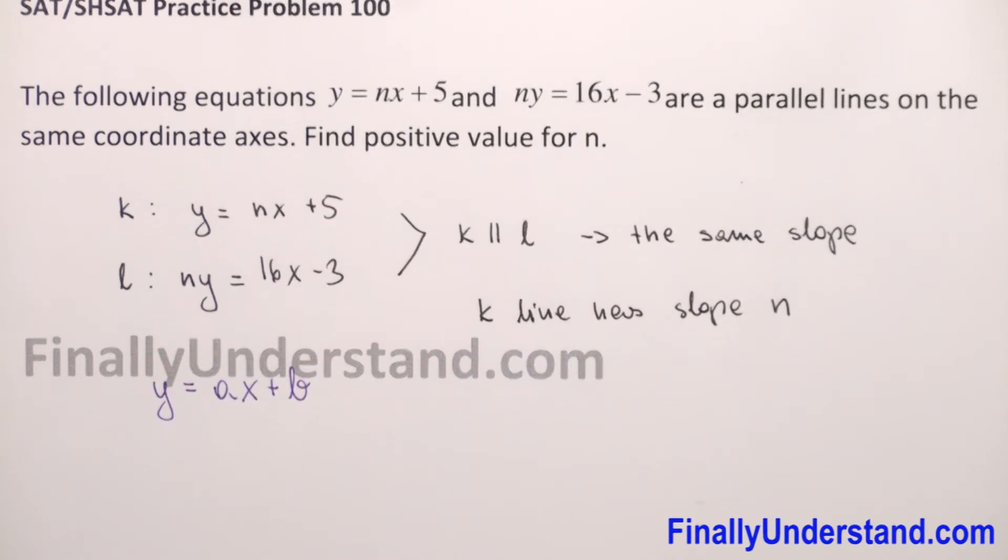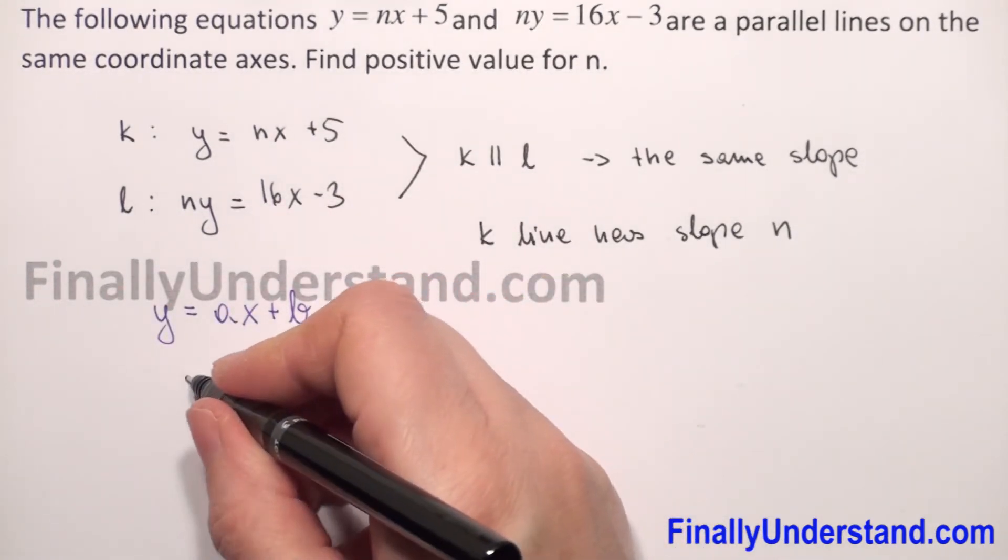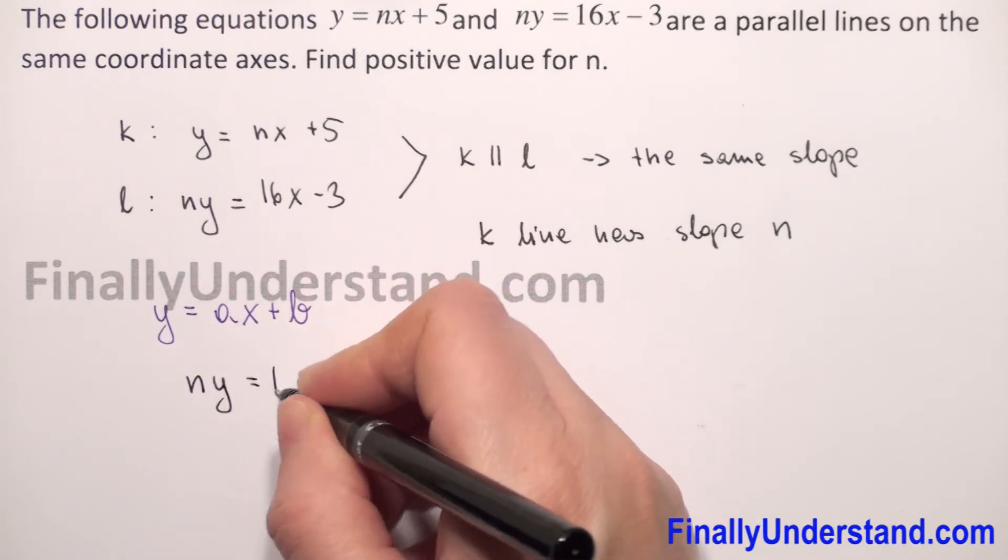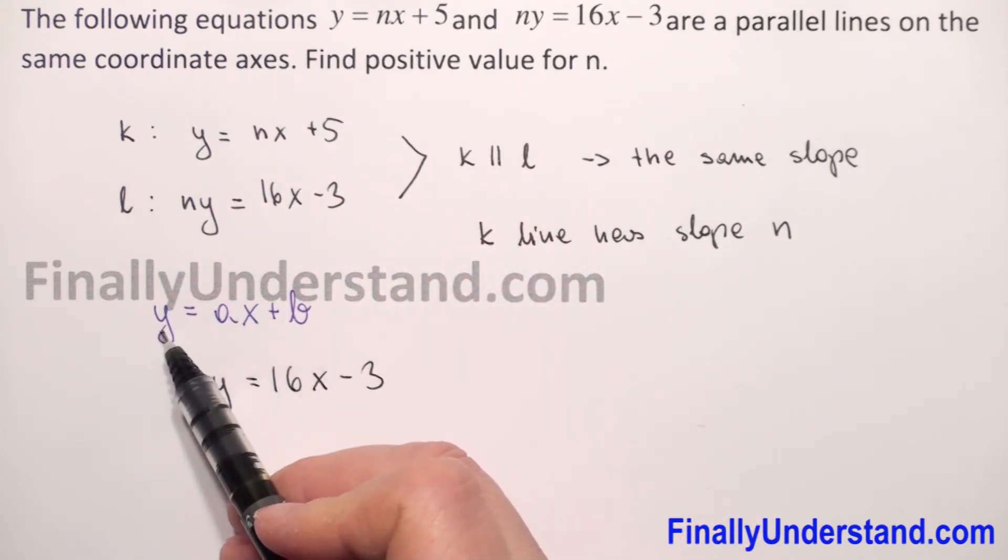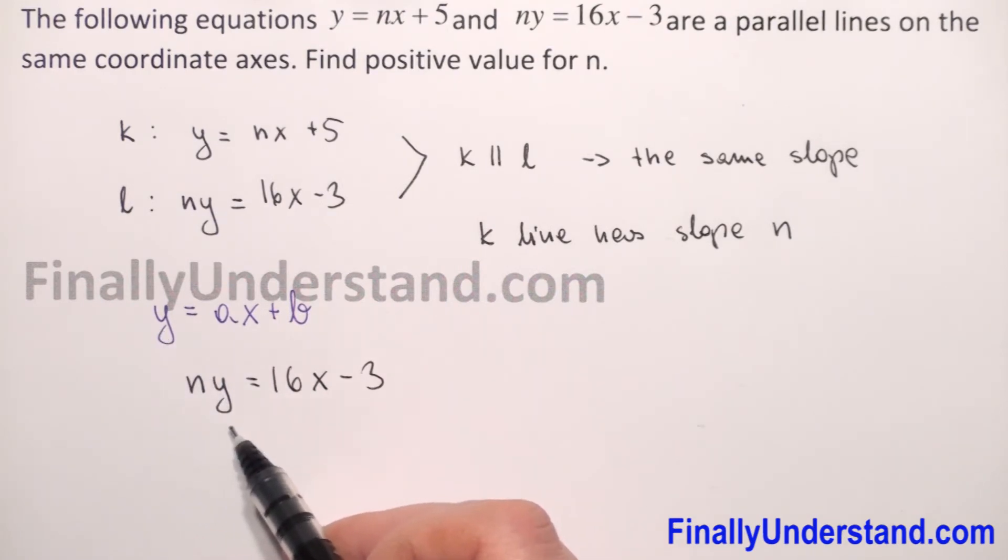First, let me copy our line: ny = 16x - 3. We don't have just y on the left. That's why I will divide both sides of our equation by n.